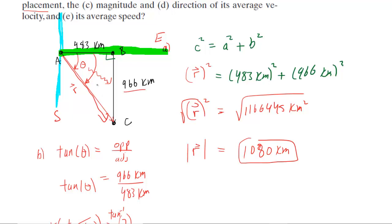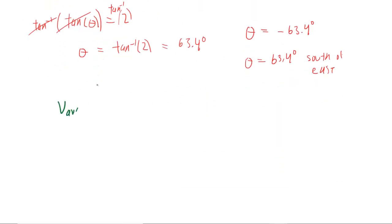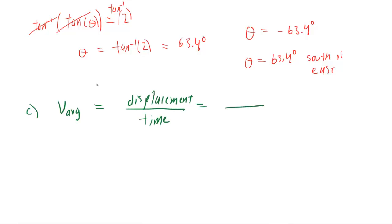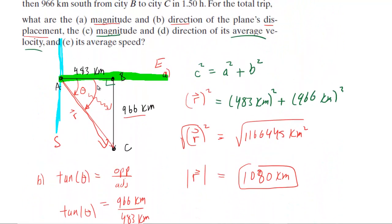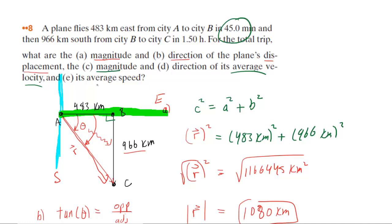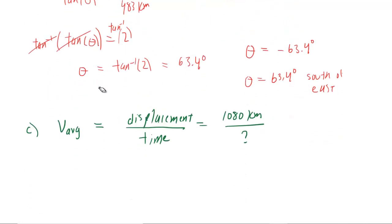Part C asks for the magnitude of the average velocity. Average velocity equals the displacement magnitude divided by the total time of flight. We already know the displacement magnitude is 1,080 kilometers. The flight from city A to city B was 45 minutes, and city B to city C was 1.5 hours. Converting 45 minutes by dividing by 60 gives 0.75 hours. Adding 0.75 hours plus 1.5 hours gives the total time of flight.